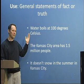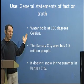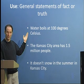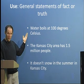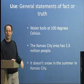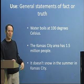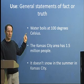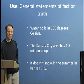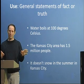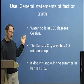Let's look at the first sentence: 'Water boils at 100 degrees Celsius.' Here, 'water' is a singular noun and 'boils' is the verb. Notice the S on 'boils' because it's third person singular. We use present simple here because it's a general statement of fact.